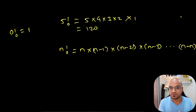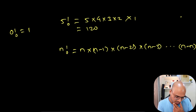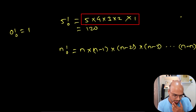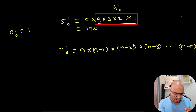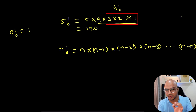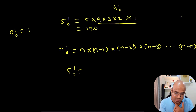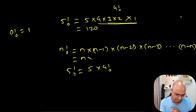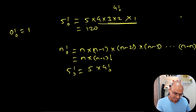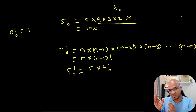So 0! = 1. Now observe the pattern: when you say 5 × 4 × 3 × 2 × 1, the part 4 × 3 × 2 × 1 is just 4 factorial. So we can say 5! = 5 × 4!. In the same way, in mathematical formula: n! = n × (n−1)!. Basically you find factorial of a number as that number times the factorial of the number minus one.